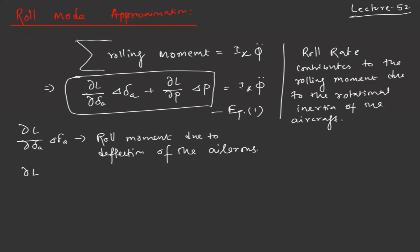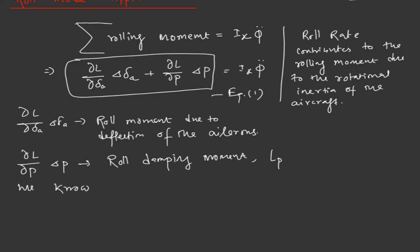And ∂L/∂P · ΔP is basically a roll damping moment. This is also denoted by L_P. We know that ΔP = Δφ_dot, so the roll rate equals the rate of change of roll angle.